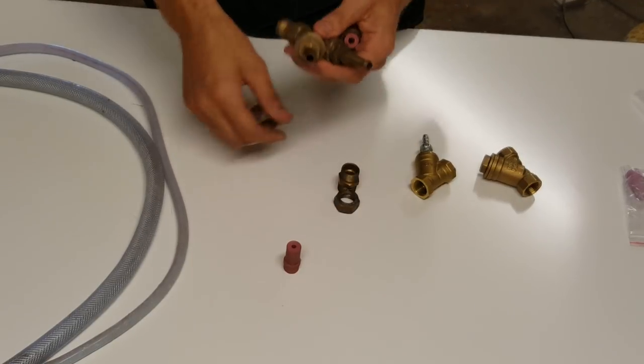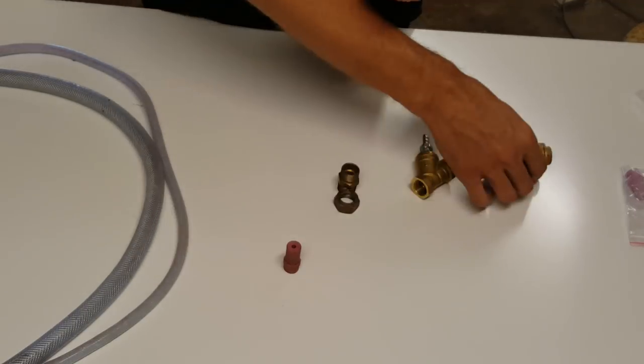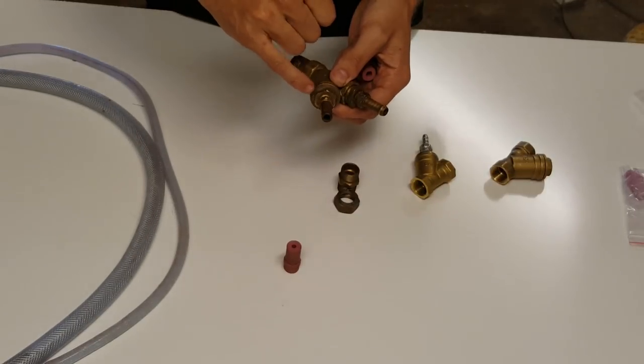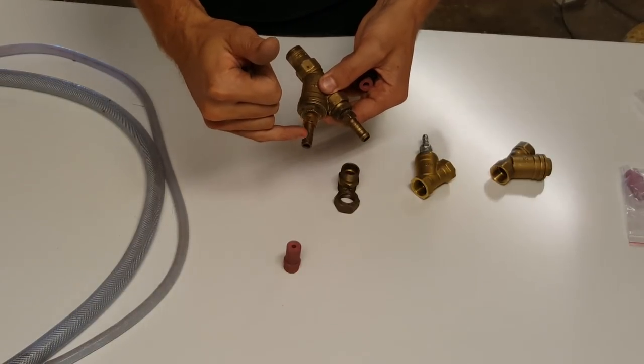On this side all I did was machine out the back of the cap there, drilled it out, tapped it in and then used a quarter inch or 10mm hose barb fitting.